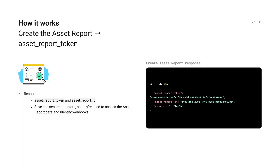Here's what the asset report create response looks like. Plaid will return an asset report token and asset report ID. Persist these securely and associate them with your borrower, because they'll be used later to retrieve the asset report and identify webhooks.